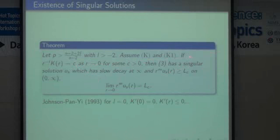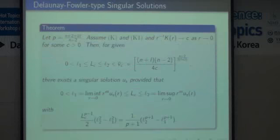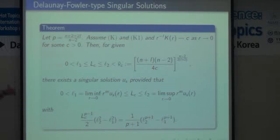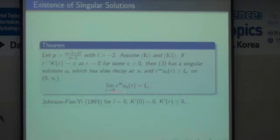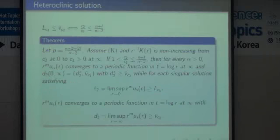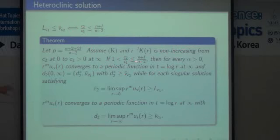Singular solution — we can prove this in more general cases. Also, in the Emden-Fowler type, there is also a singular solution. My title is 'Asymptotic Self-Similar Solution.' It means that K is asymptotic to some constant like this one. Then the behavior is like this one — I call this an asymptotic self-similar solution. More generally, for singular solutions, even in the not non-increasing case, if a certain condition is satisfied, then the radial solution is of Emden-Fowler type. I can prove this also. In the more general case where this condition is not satisfied, it is still open.